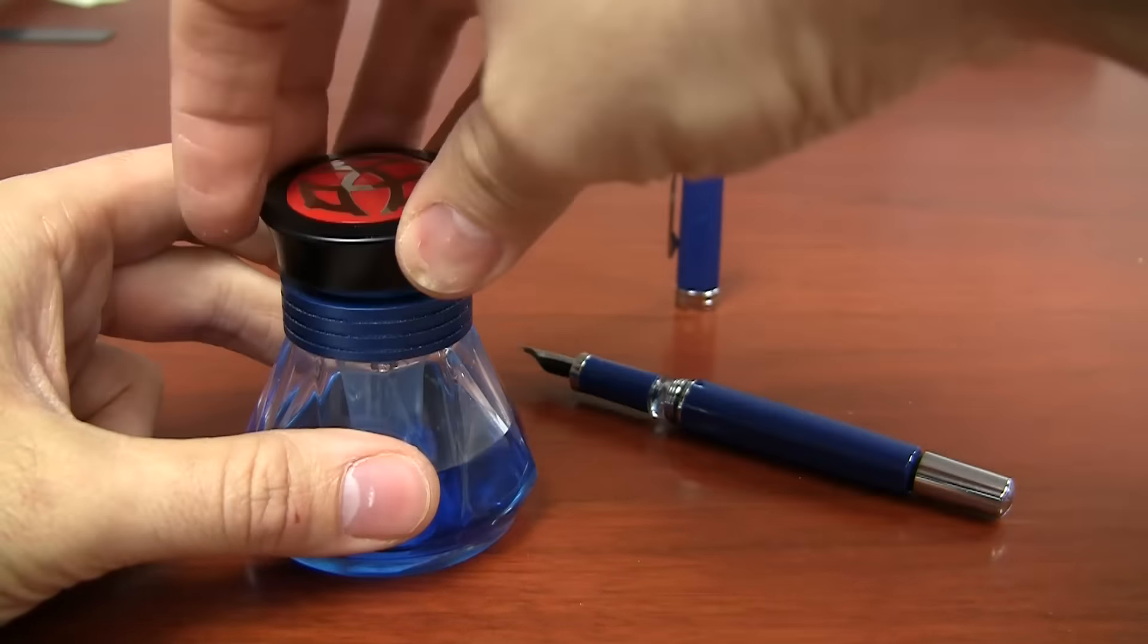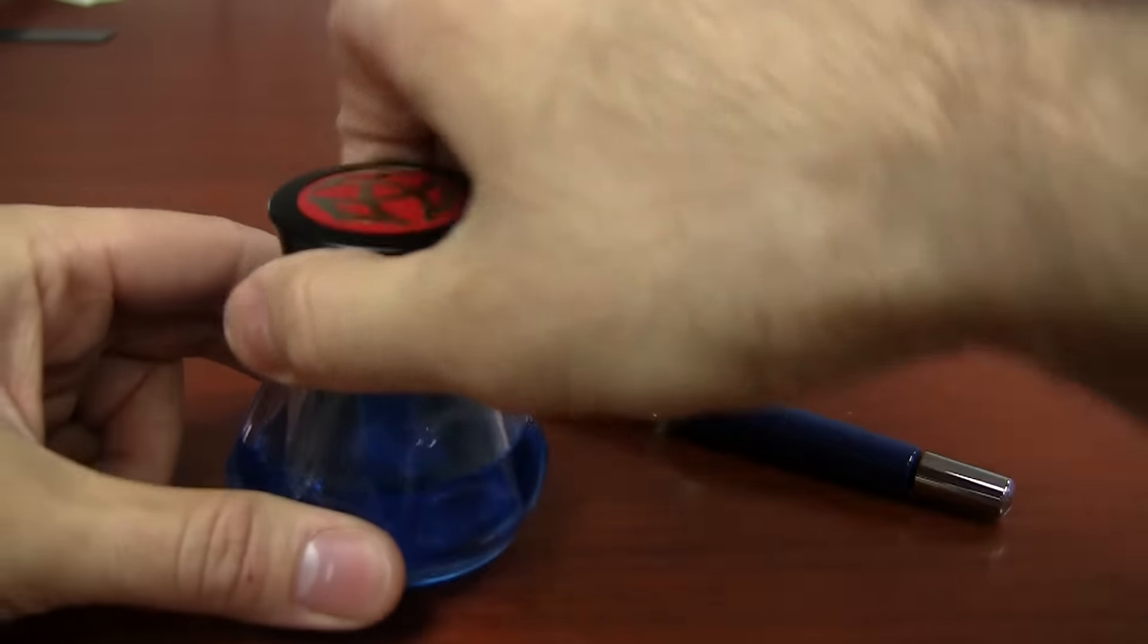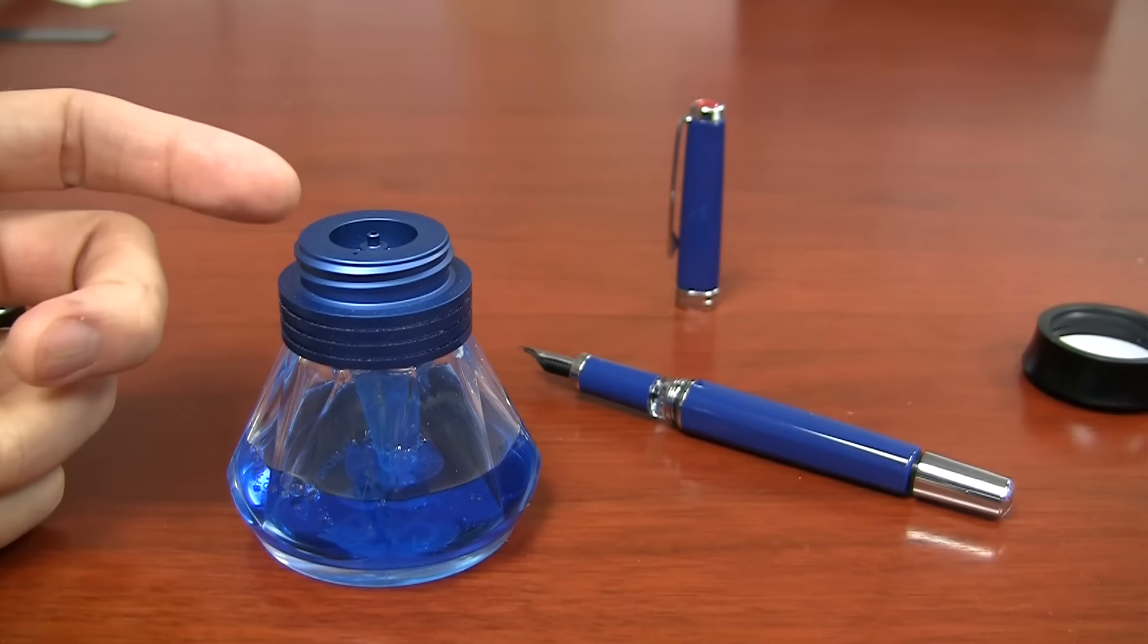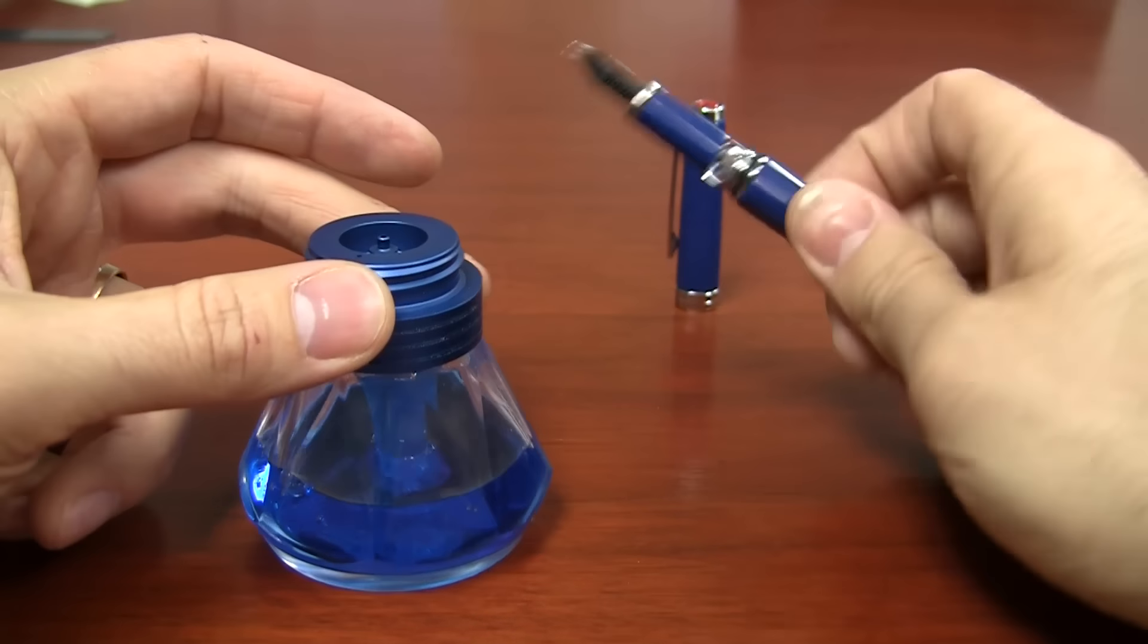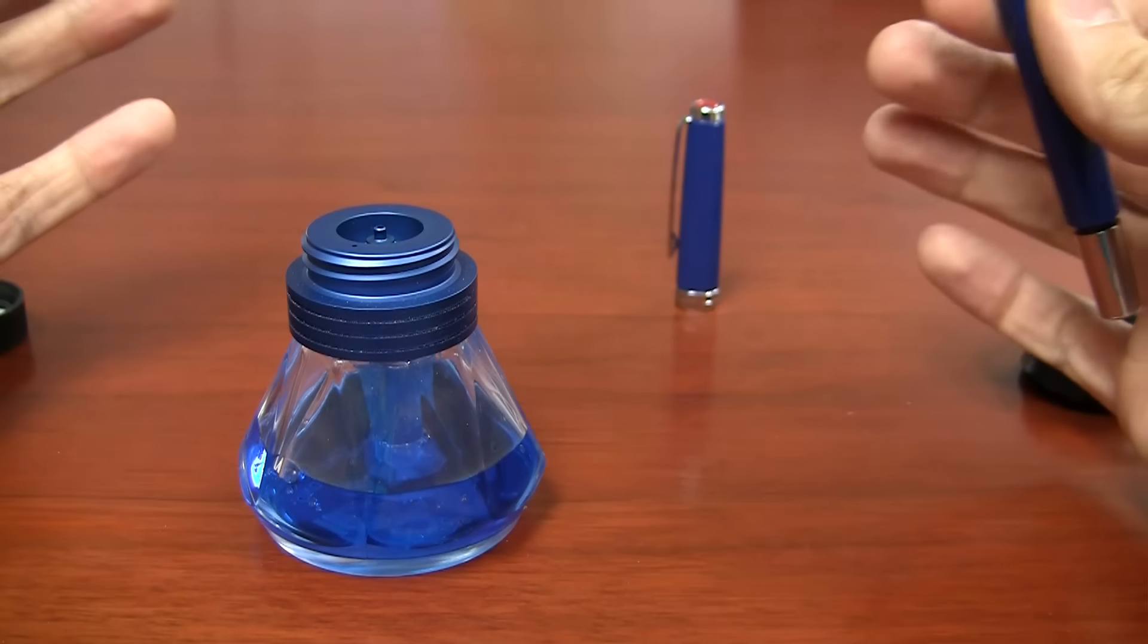So you take this part and with your cap on and everything, if you've got the cone insert in there, you need to kind of flip the bottle upside down and get some ink into that insert. You don't have to have that insert in there if you're using this method, but if you do, you want to make sure that you at least have ink in that insert. Otherwise you're just going to be drawing air.